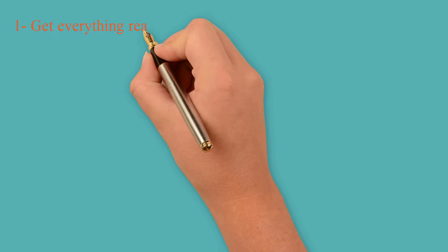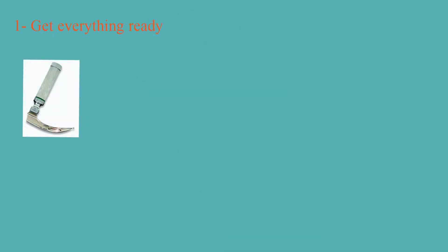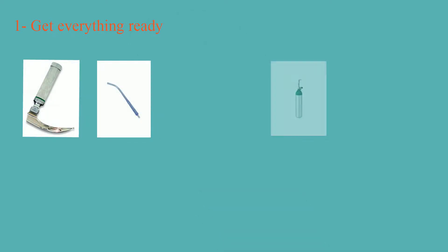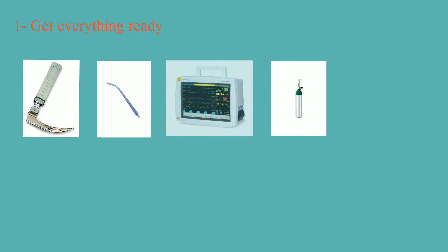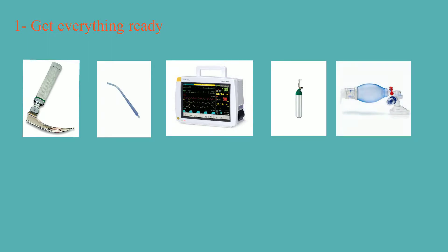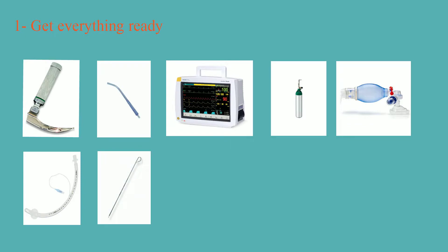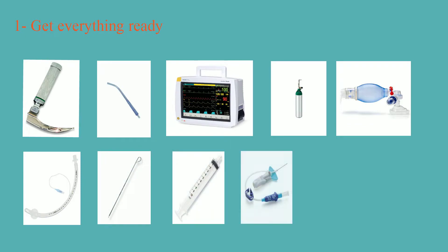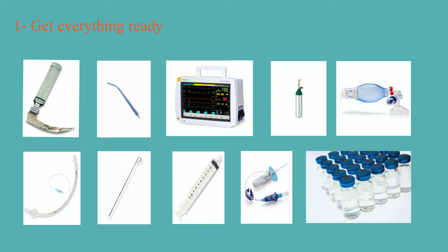First, get everything ready: direct laryngoscope, suction catheter, oxygen source, cardiac monitor with blood pressure, pulse oximeter, and end-tidal CO2 waves, ambo bag with face mask, endotracheal tube with a stylet and 10cc syringe to inflate the cuff. Check and make sure your patient has two IV accesses, and finally, prepare your medications.